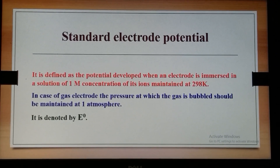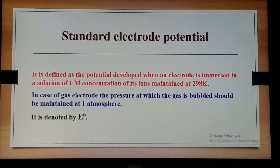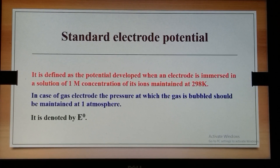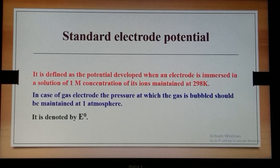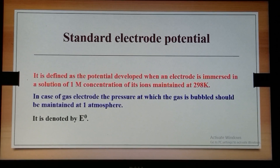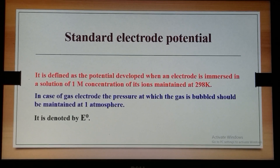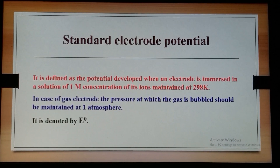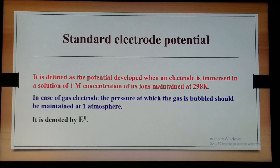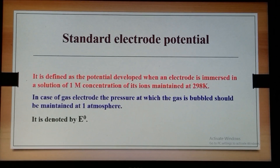The potential which develops under those conditions is called the standard electrode potential. In case of a gas electrode, the gas is also bubbled at a pressure maintained at 1 atm, and it is denoted by E⁰.